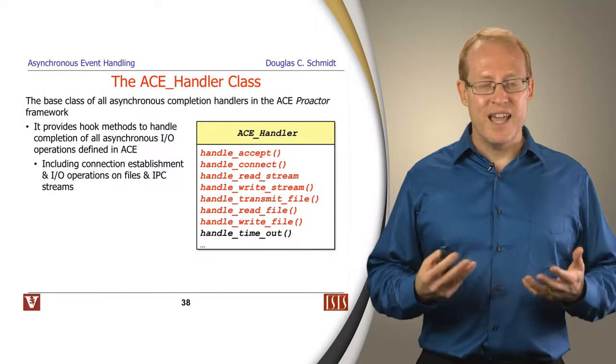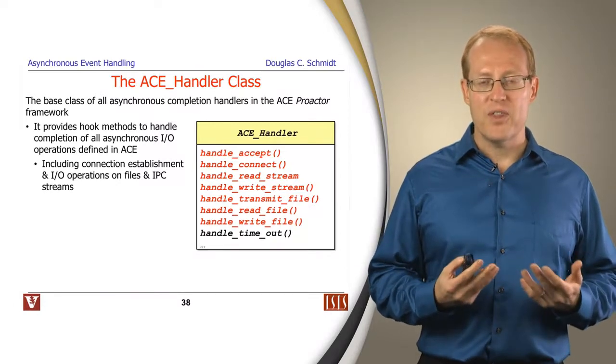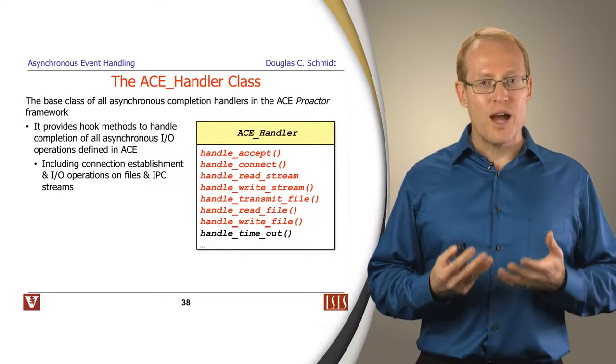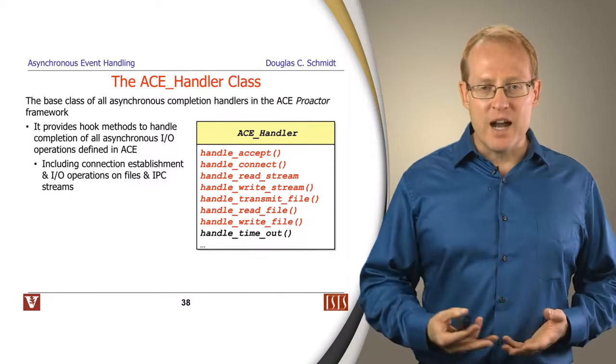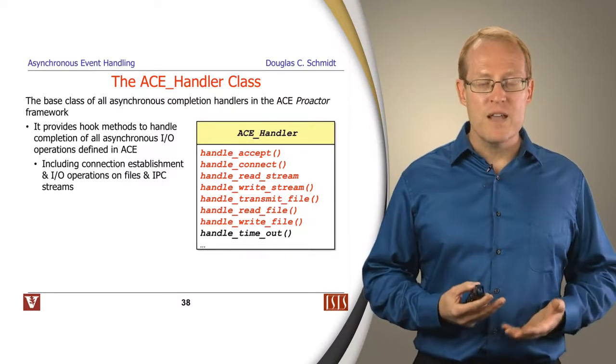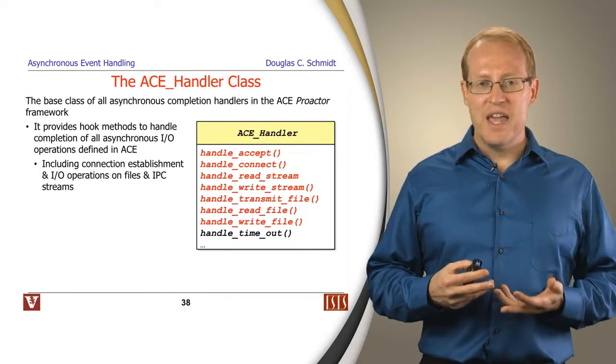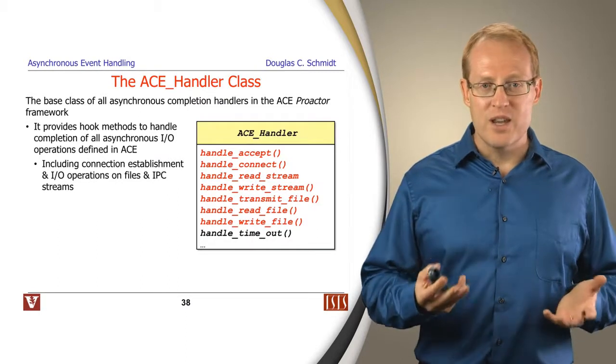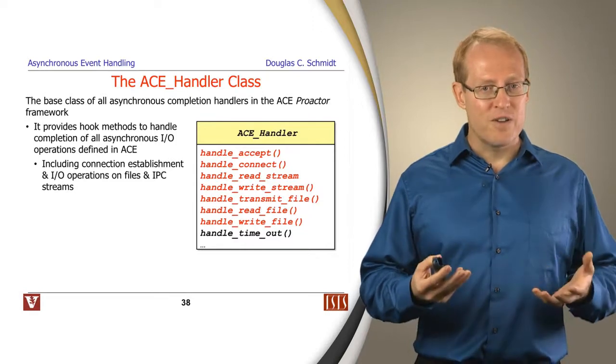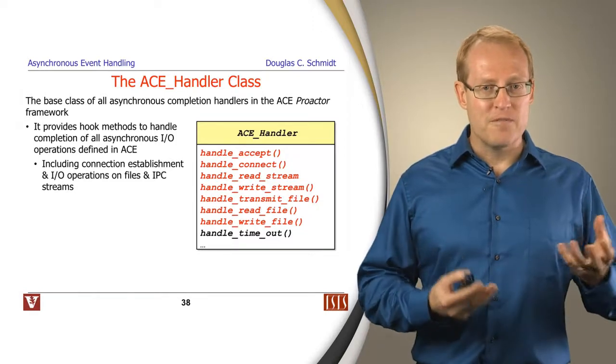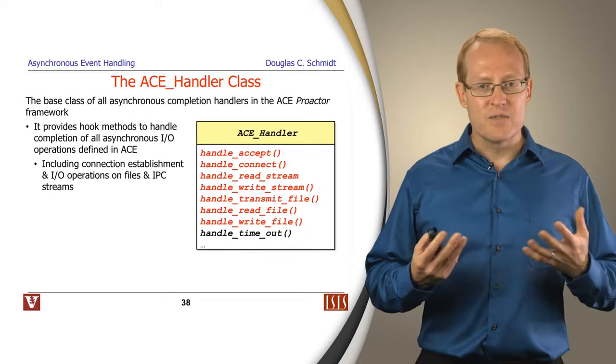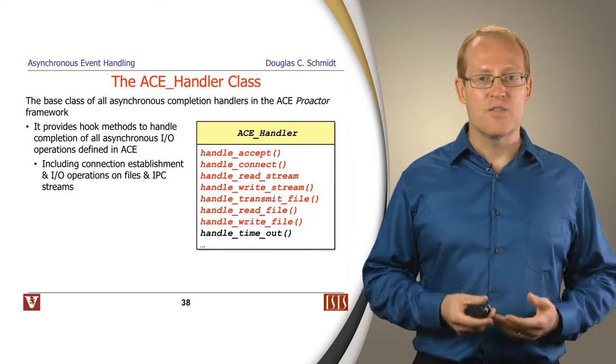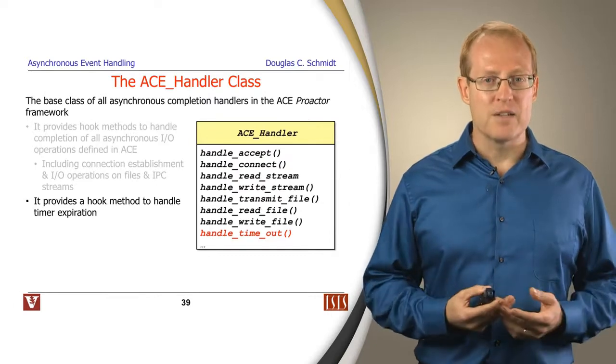The next class handles the completion of these asynchronous operations when they're done. This is called the ACE handler class. This class provides a set of hook methods that are called back automatically by the ProActor framework when an asynchronously invoked operation completes. For each different kind of operation that we can have run asynchronously - asynchronous accepts, connects, reads and writes on streams, reads and writes on files, other transmissions such as using transmit file which use direct memory access to do efficient asynchronous transfer of bulk data from a file to a socket - all these different kinds of completion events and their handling can be expressed through a single base class interface called ACE handler. It also provides a way to handle timeout events.